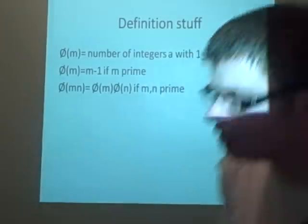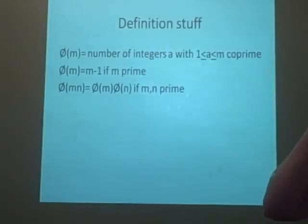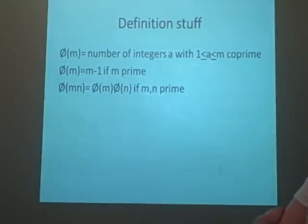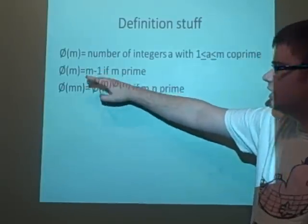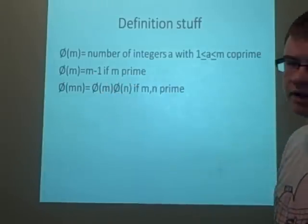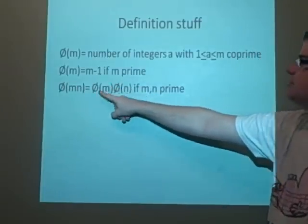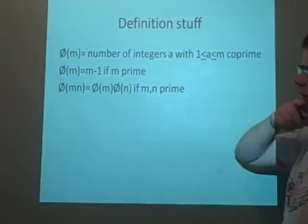More definition stuff. I've forgotten what this symbol's called. I think it's psi. So we have psi of m, this is going to be the number of integers that are co-prime which are less than m. So if you had psi of 4, then you've got 3 and 1, so that'd be 2. Here, psi of m is m minus 1 if m is prime, because every number will be co-prime. And if you multiply them, so we have psi of m times n, this is psi of m times psi of n, if and only if m and n are prime.